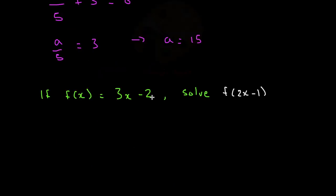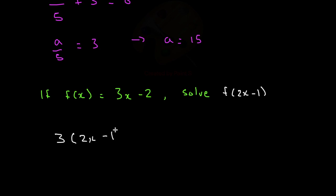Let's look at one final example. If f(x) is equal to 3x minus 2, solve f(2x − 1). All we need to remember is that 2x minus 1 is our input, and we need to put that inside the function, replacing the x with 2x minus 1. So we have 3 times (2x minus 1), minus 2. This gives us 6x minus 3 minus 2, which then gives us 6x minus 5. And that is our answer.